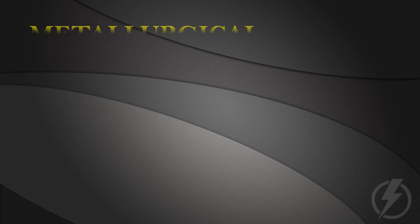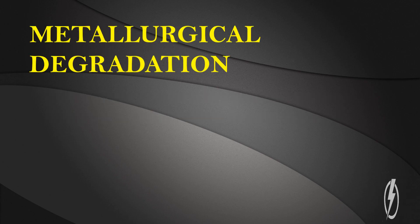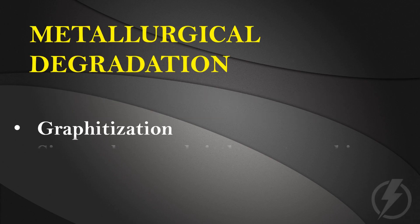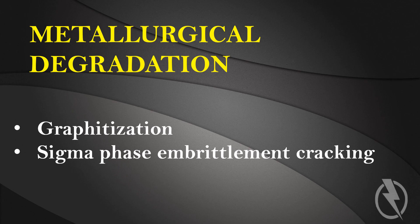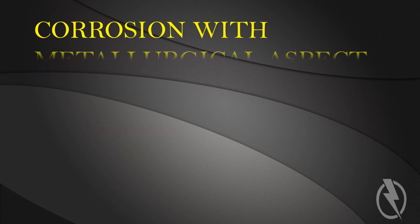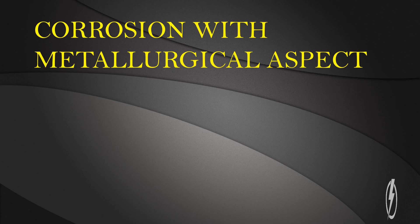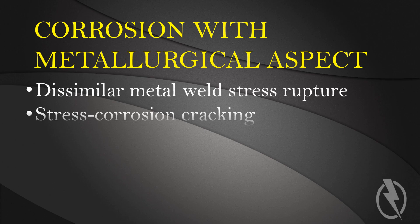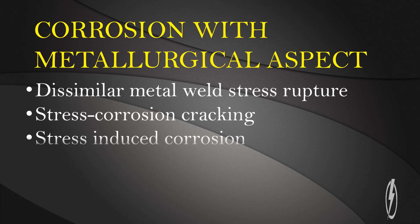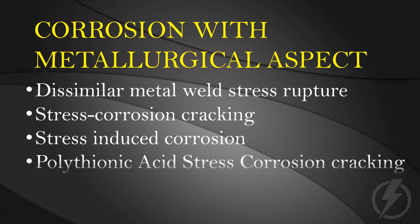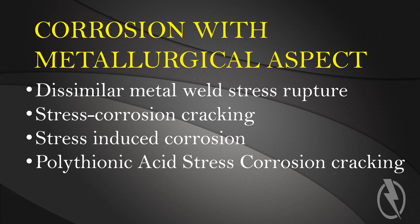Metallurgical degradation: graphitization, sigma phase embrittlement cracking. Corrosion with metallurgical aspect: dissimilar metal weld stress rupture, stress corrosion cracking, stress induced corrosion, and polythionic acid stress corrosion cracking.